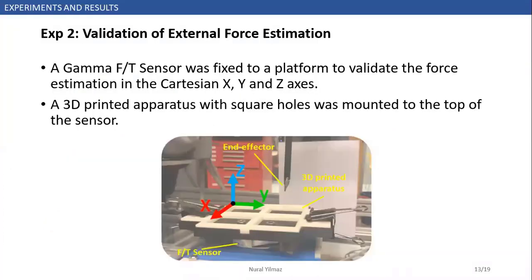For validation of external force estimation in Cartesian X, Y and Z axis, we placed a force sensor to a platform and we mounted a 3D printed apparatus with square holes to the top of the sensor because we wanted to touch in each axis separately.